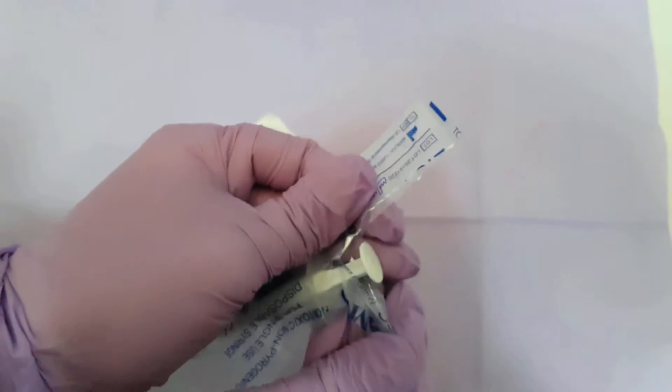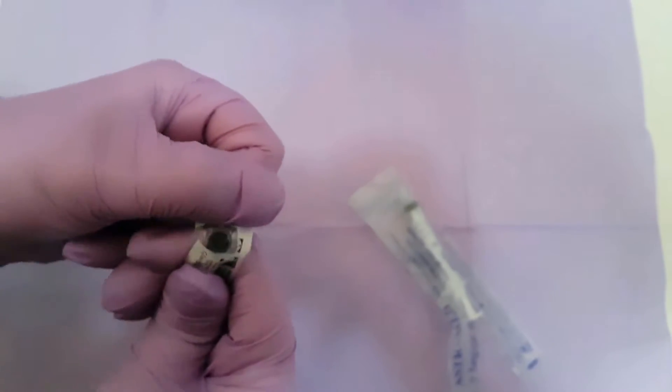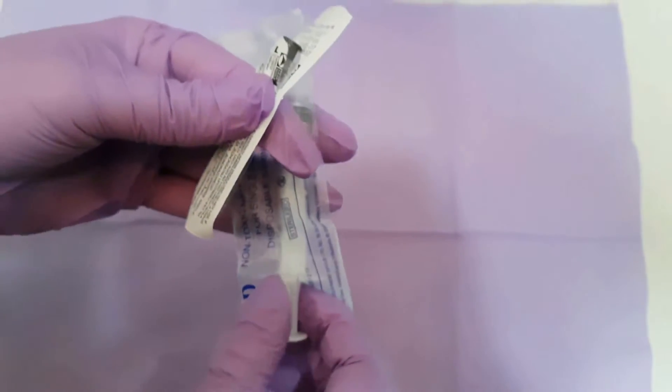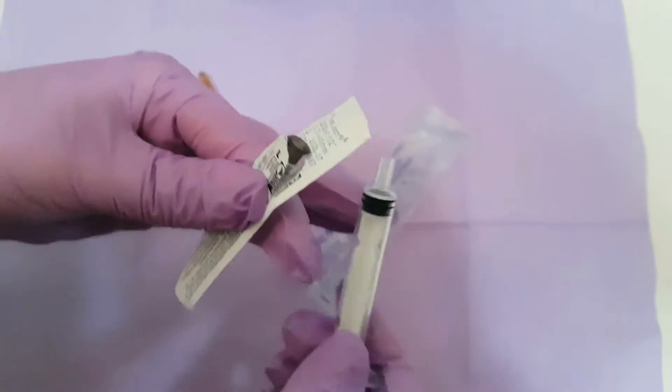First we open up the plastic bag that contains the sterile syringe in a way that doesn't compromise its sterility. Next we open up the needle that is also for one use only. We have to be careful not to hurt ourselves.